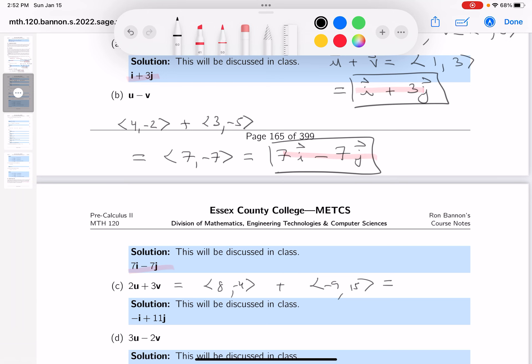And 3 times v would be -9, 15. Relatively simple to add together. Adding the components, you get -1 and 11. In ij notation, that's -i + 11j. Let me check if we got that. And we did, we got the answer.